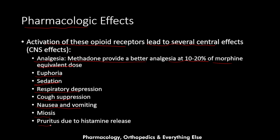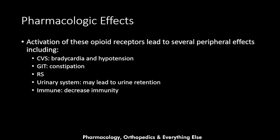Methadone leads to miosis, which is constriction of the pupil, due to its parasympathetic effect, and it leads to pruritus due to histamine release. Methadone also produces several peripheral effects, including cardiovascular effects in the form of bradycardia and hypotension, and GI effects in the form of constipation.